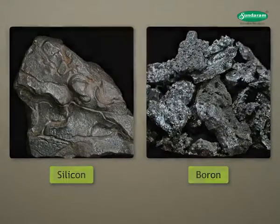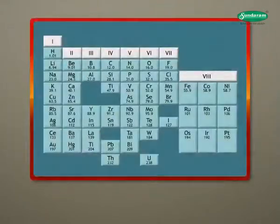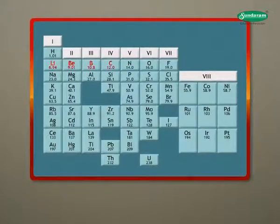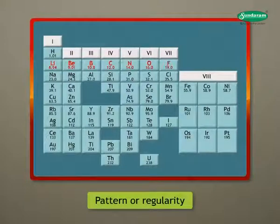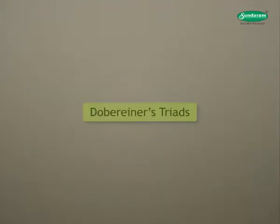To overcome these difficulties, scientists tried to find out some pattern or regularity in properties of elements. Let us see what is meant by Dobereiner's triads.